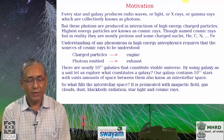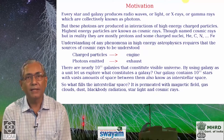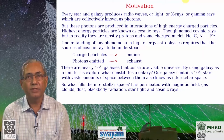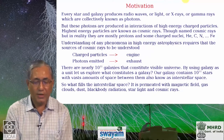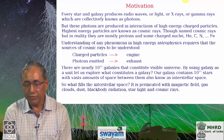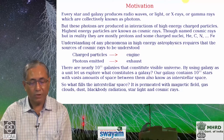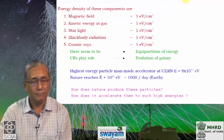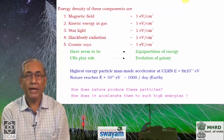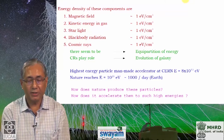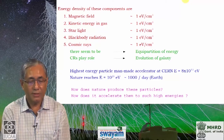There are 10^11 galaxies that constitute the visible universe. Our galaxy contains 10^11 stars with vast amounts of interstellar space between them. The interstellar space is permeated with magnetic field, gas clouds, dust, black body radiation, starlight, and cosmic rays. If you examine the energy density of these components — magnetic field, kinetic energy in gas, starlight, black body radiation, and cosmic rays — all are approximately one electron volt per cubic centimeter. There seems to be an equal partition of energy. We do not know the reason, but this is an observational fact, and we expect cosmic rays to play an important role in the evolution of our galaxy.